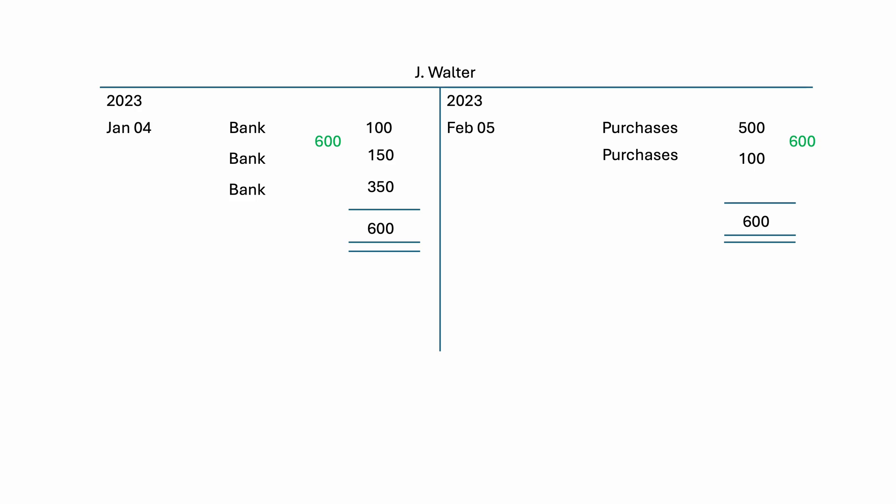In summary, in the simplest of terms, the balance is found by subtracting the smaller total from the larger total.